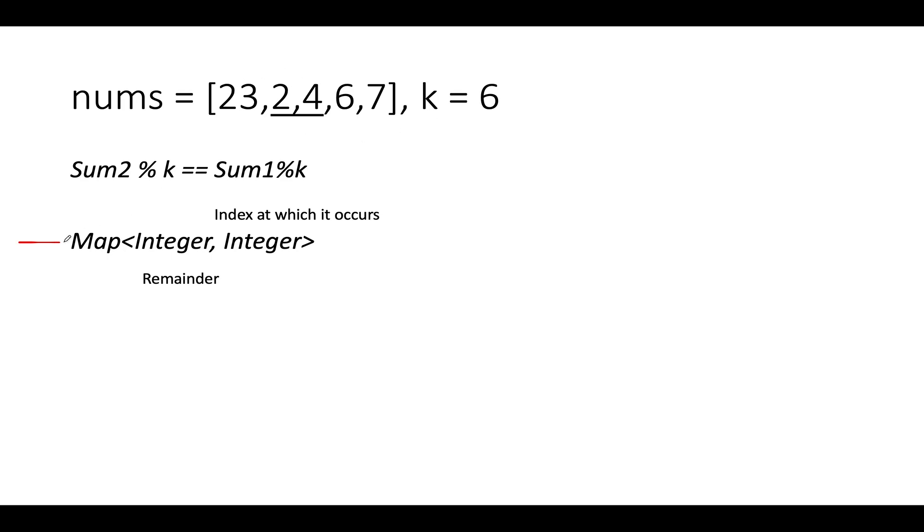So here I will create a map and this map will store the remainder and the index at which this remainder occurs.